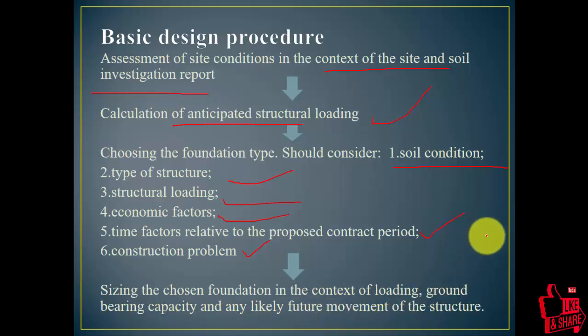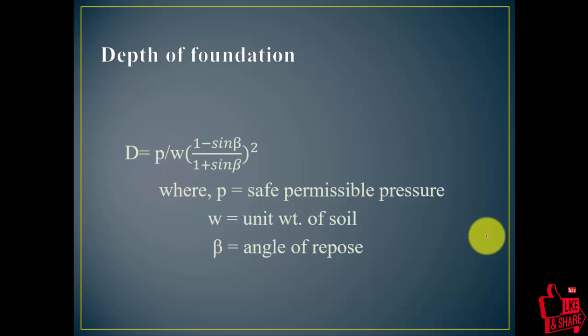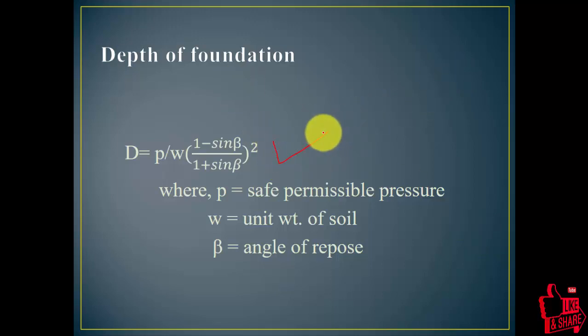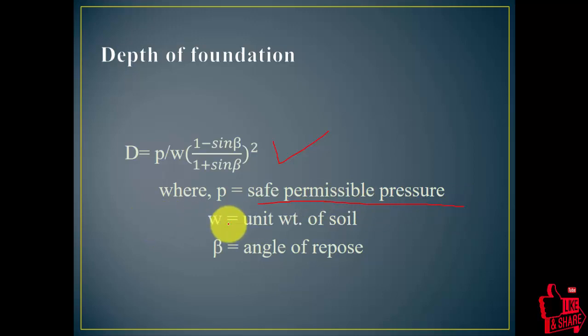After looking at loading and bearing capacity in the future, we decide which footing to use. Once the footing type is decided, we determine the depth using the formula: d = (p/w) × ((1 − sin β) / (1 + sin β)) + y, where p is the surcharge position, w is the unit weight, and β is the angle of repose.